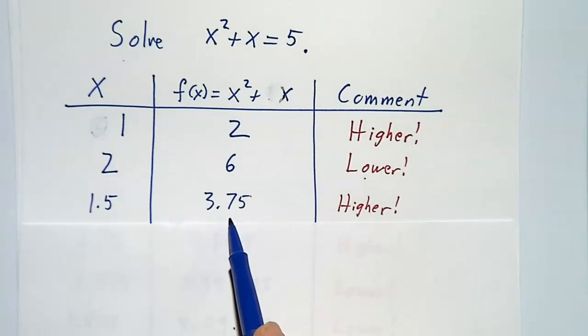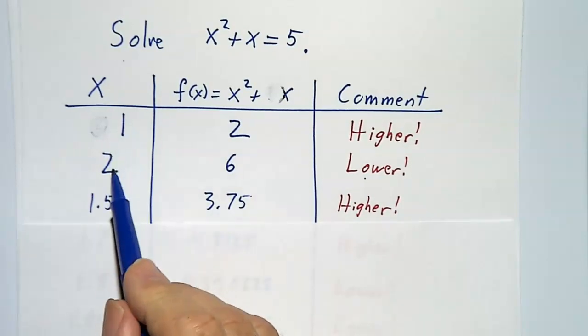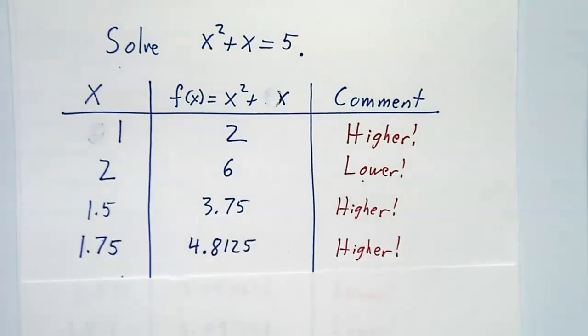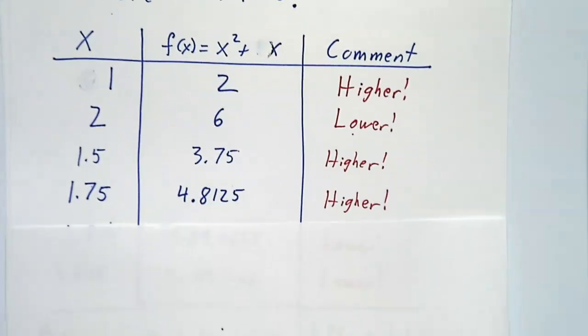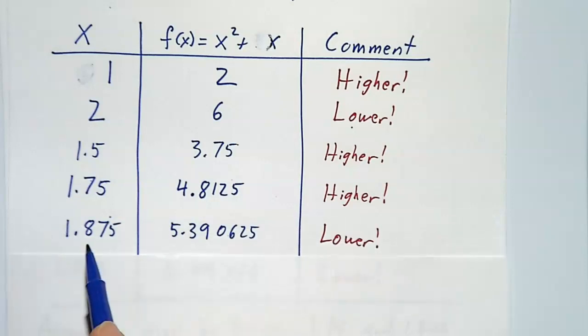You plug in, and you say, whoops, I need to go higher. So now you know it's between 1 and a half and 2. So you guess 1 and 3 quarters. You need to go higher.